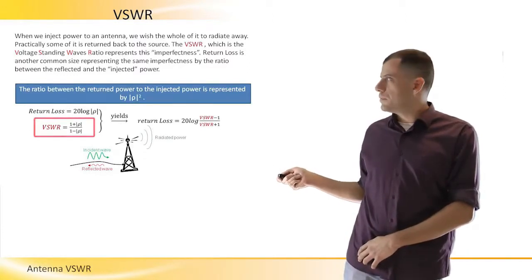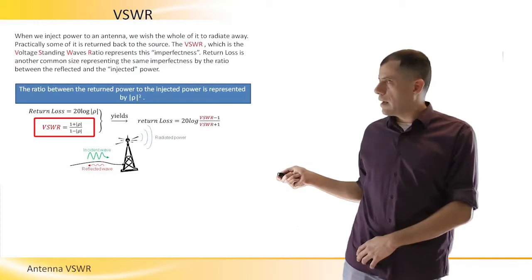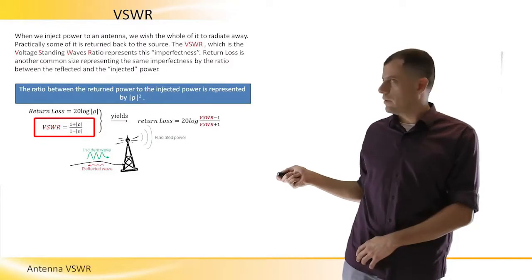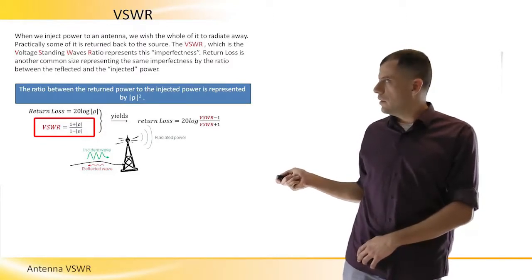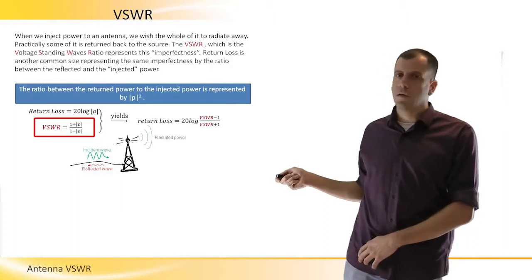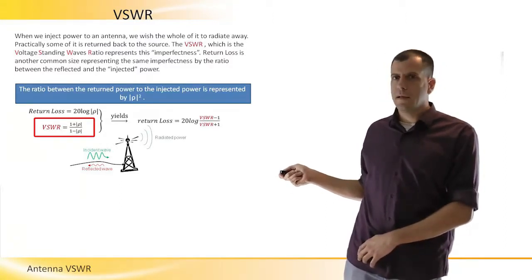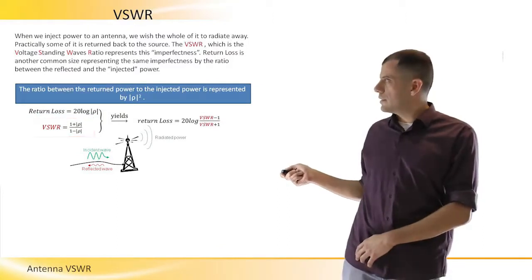If we take 1 plus rho, absolute value of rho, divided by 1 minus rho, the absolute value of rho, then we will get the VSWR. Of course, because they are both related to rho, or dependent on rho, then we can have a formula that's connected between them two.